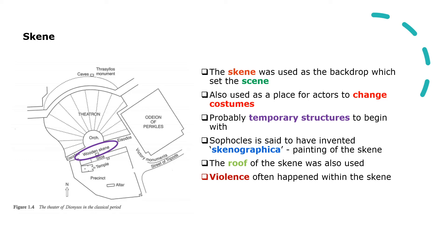The roof of the skene could be used by actors playing gods, allowing them to appear on high. One interesting use of the skene was as a place for violence. A lot of violent things happen in tragedy, but you might be surprised to learn they don't happen on stage — rather they are reported as happening elsewhere, or they happen within the skene, with the audience hearing aspects of the violence, such as Medea's children pleading for their lives.